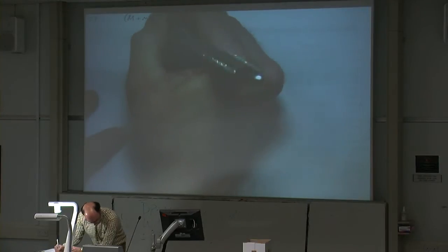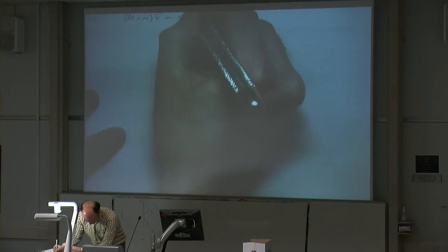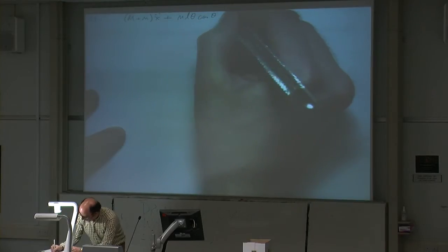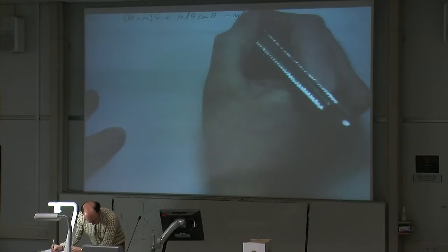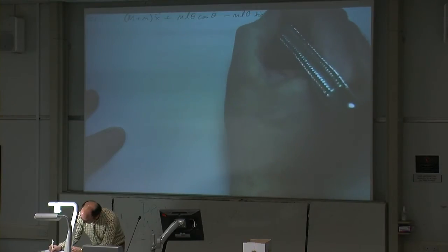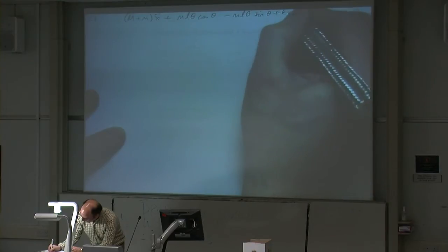We ended up with two equations - you may want to refer back to your notes from last week. So for i equals 1, this is question 20: (M+m)Ẍ + MLθ̈cos(θ) - MLθ̇²sin(θ) + KX = 0. That was one equation.